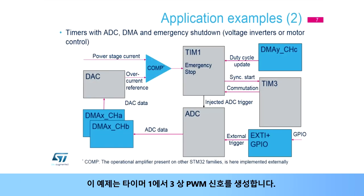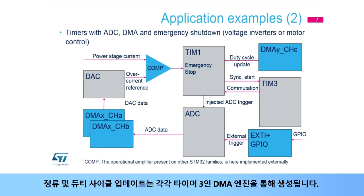This example generates three-phase PWM signals in Timer 1. The commutation and duty cycle update are generated via the DMA engines, respectively Timer 3.